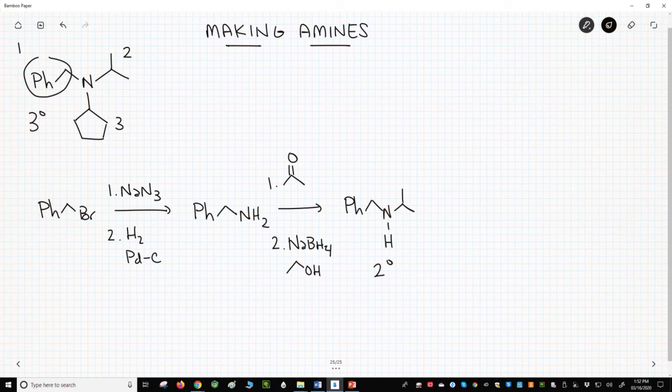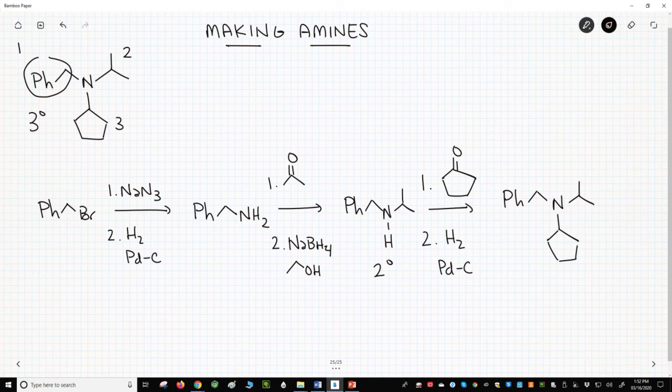Now we are ready to use the chemistry of this video: take the secondary amine and another carbonyl compound, cyclopentanone, to make an enamine, and then we'll reduce that with hydrogen and palladium on carbon to make our tertiary amine.